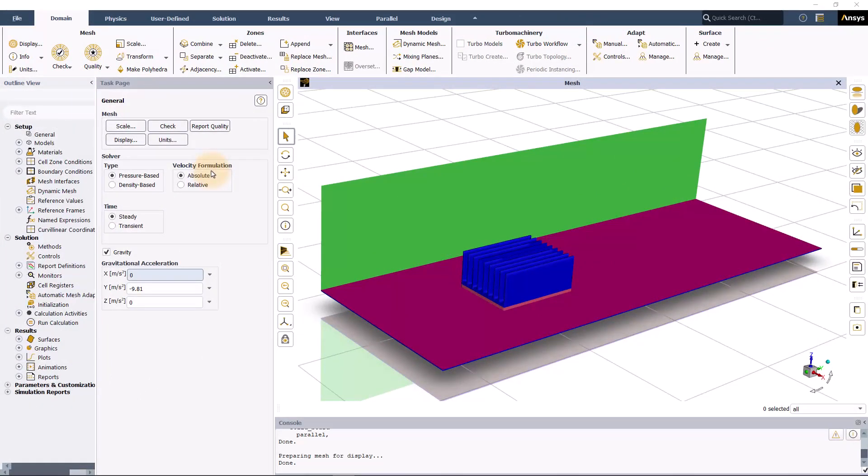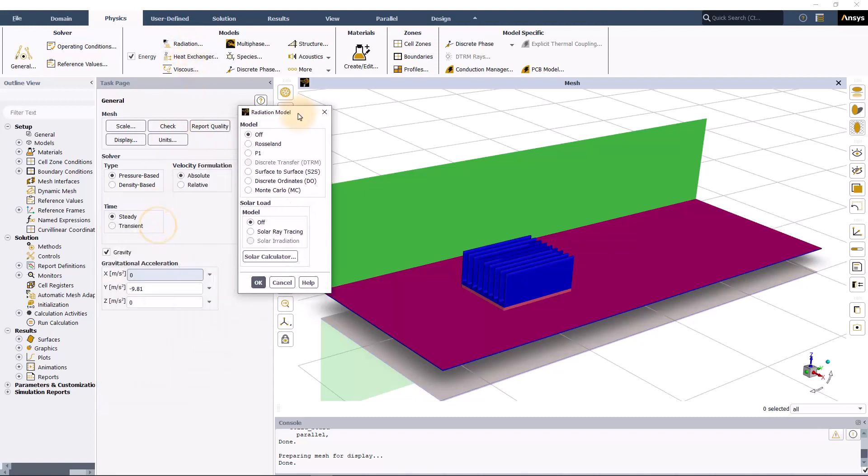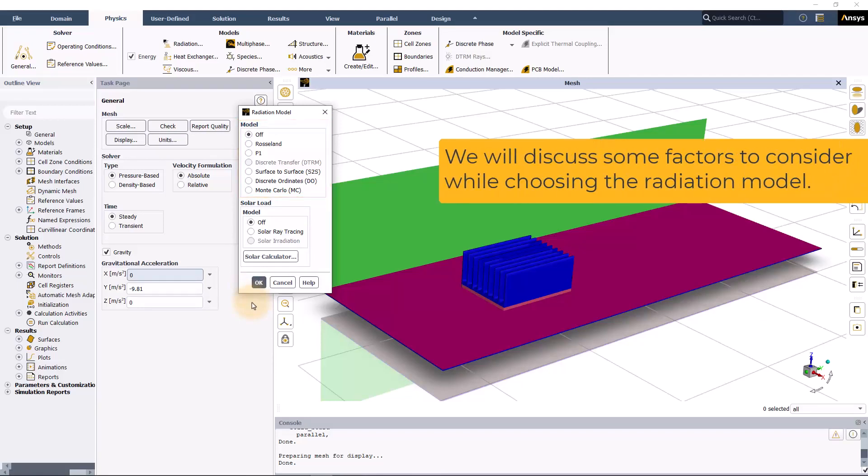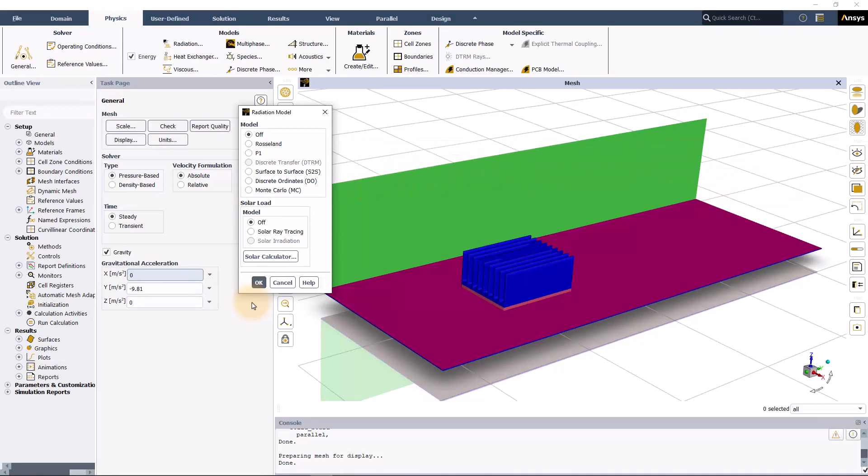If you determine that radiation is important, the next thing you have to do is activate a radiation model, which you can do in the ribbon. Radiation is located in the models group of the setting up physics tab. You can see there are a few models, and there's not enough time to discuss each of the models, but I will explain some factors to consider when deciding which model to use, and later there will be a table showing what models are most often used in common applications.